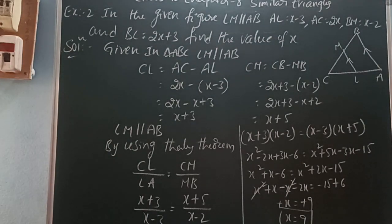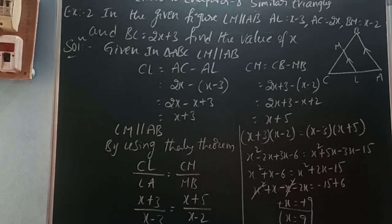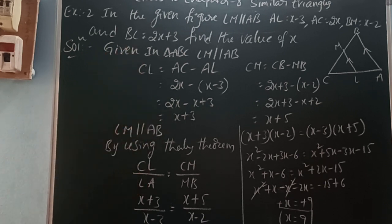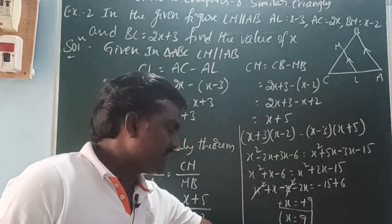So in the given figure, LM is parallel to AB, AL is x minus 3, AC is 2x, BM is x minus 2, and BC is 2x plus 3. Find the value of x. By applying the Thales theorem, the value of x is equal to 9.